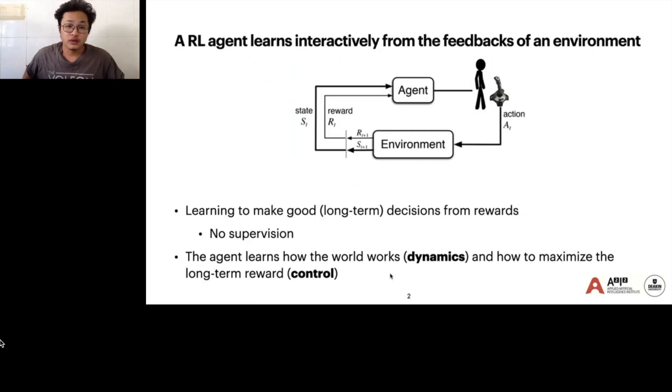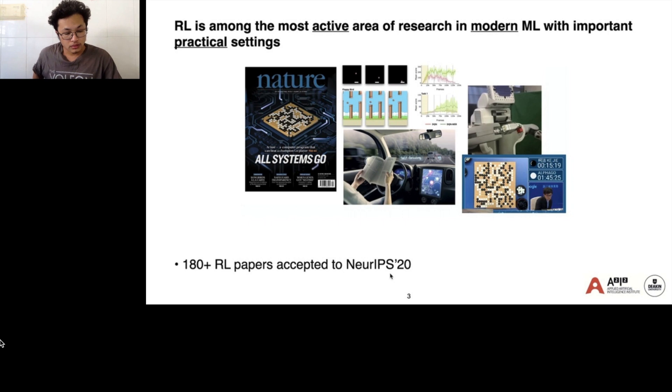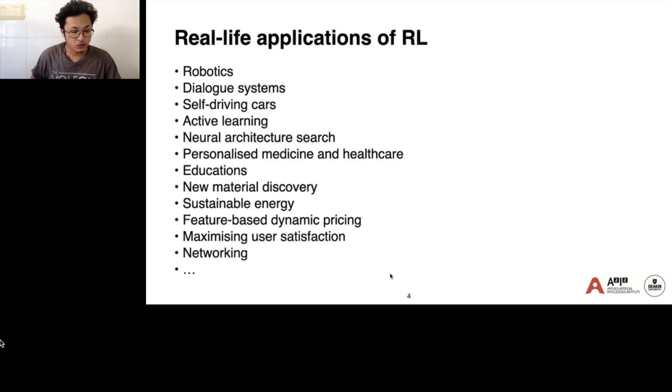A reinforcement learning agent learns interactively from the feedbacks of the environment. The goal is to learn how to make a good decision from the rewards without any supervision. Reinforcement learning is one of the most active areas of research in machine learning with many important practical settings. It has vast real-life applications from robotics, diagnostics, and self-driving cars to material discovery.